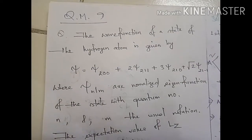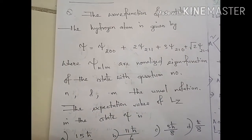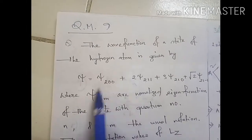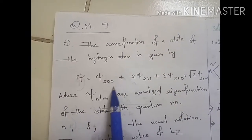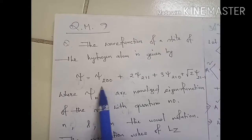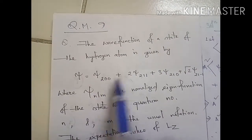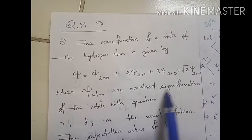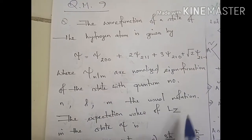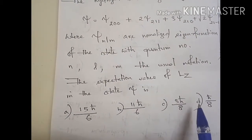Hello everyone. This is a problem from quantum mechanics. We are asked to find the expectation value of Lz. The wave function of a state of a hydrogen atom is given as: psi equals psi_200 plus 2*psi_211 plus 3*psi_210 plus root2 * psi_21-1, where the notation psi_nlm represents the quantum numbers n, l, m. These are normalized eigenfunctions. We need to find the expectation value of Lz in the state psi.